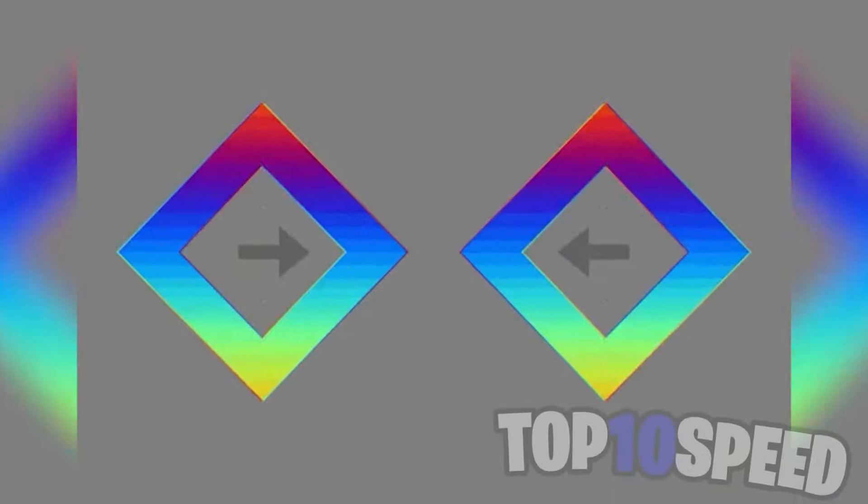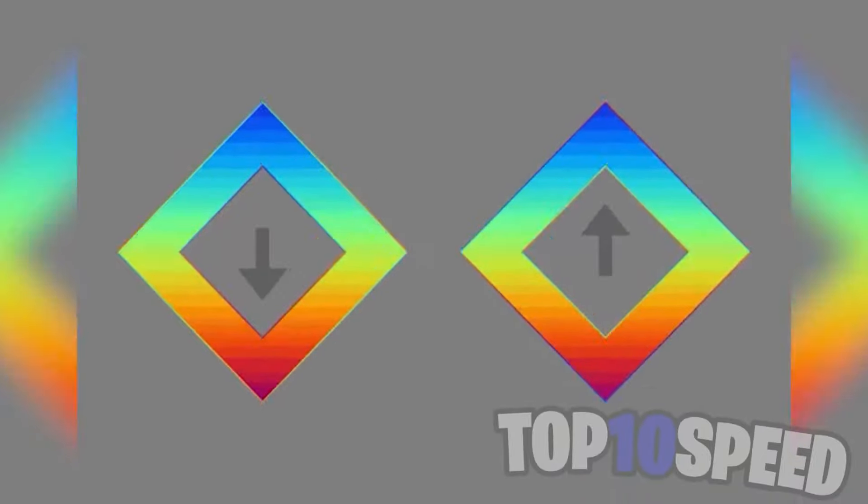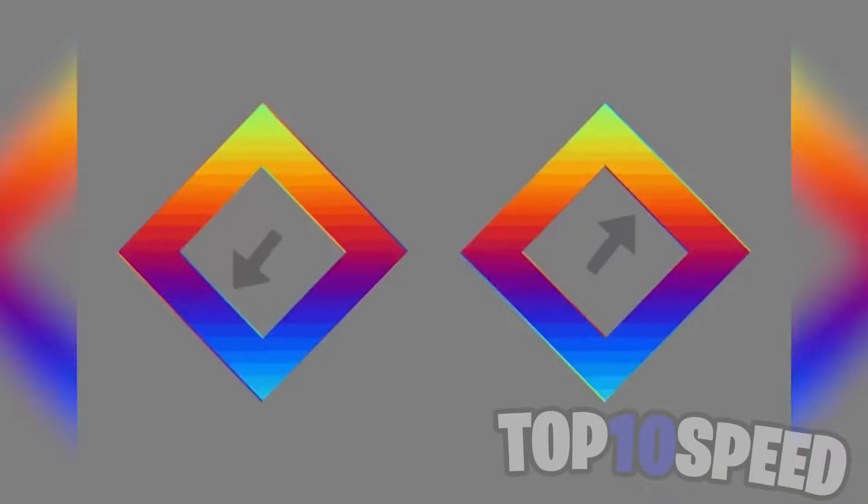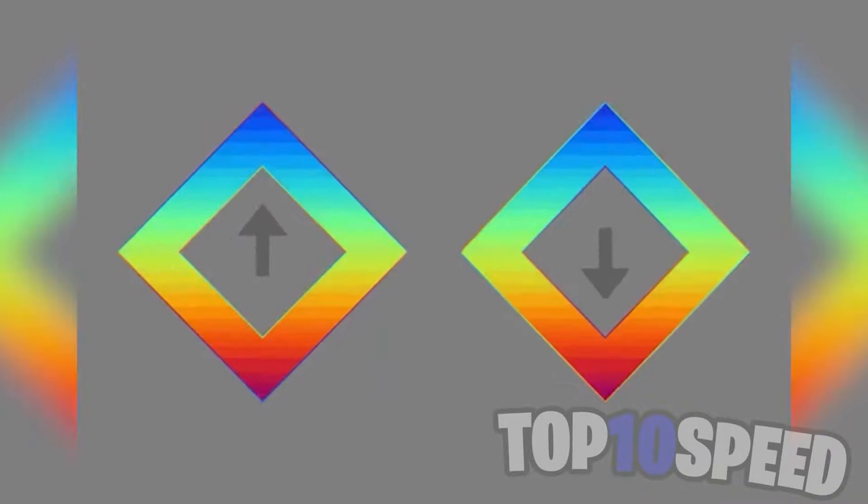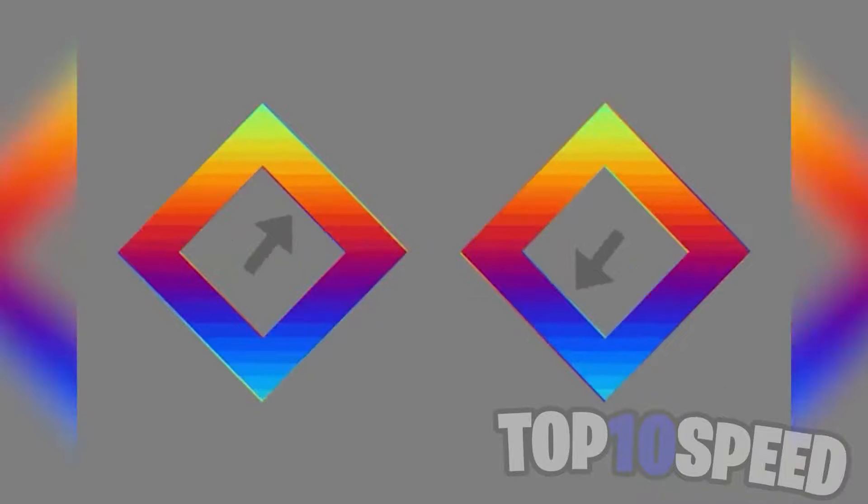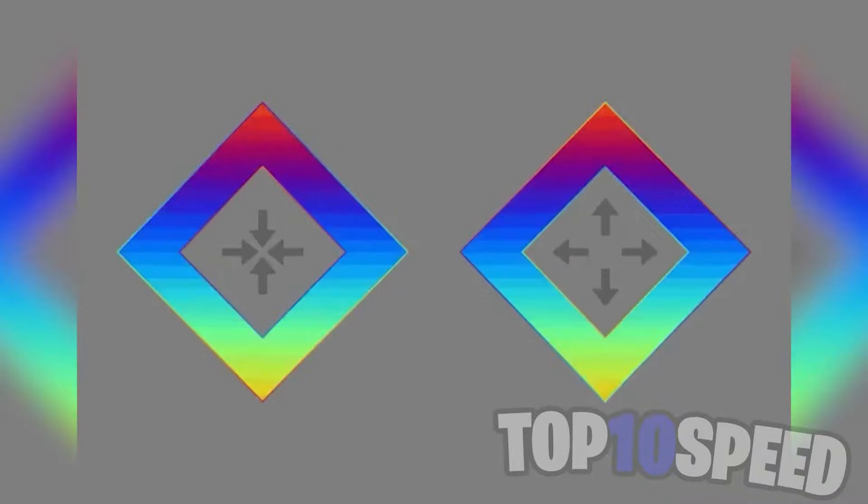This illusion is a massive eye trick. It appears that the diamonds are moving in whichever direction the arrows are pointing in, yet this isn't true at all. The diamonds actually aren't moving at all. I have no clue how this works, yet it is so mind-blowing. I am so confused.